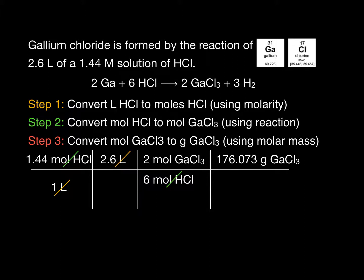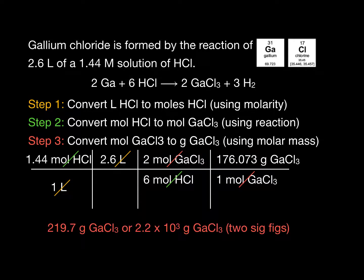So let's position the grams in the numerator and the moles in the denominator. Again, the units nicely cancel leaving us with units of grams in the final answer. If you punch this in on your calculator, it comes out to be about 220 grams of gallium chloride.